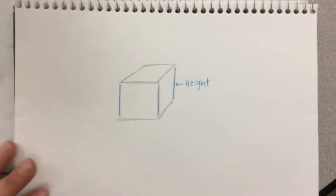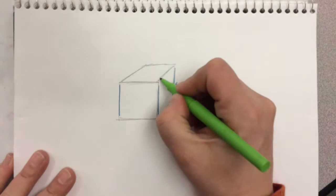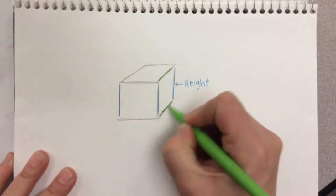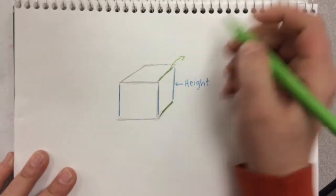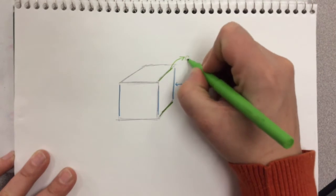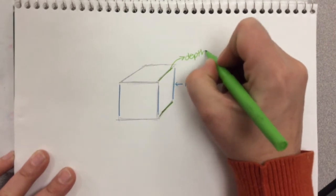Then I'm going to grab green and do these diagonal lines going back to show that this is going to represent the depth of the cube.